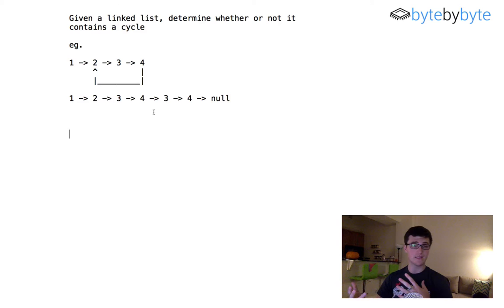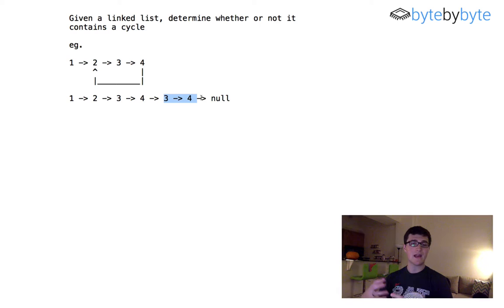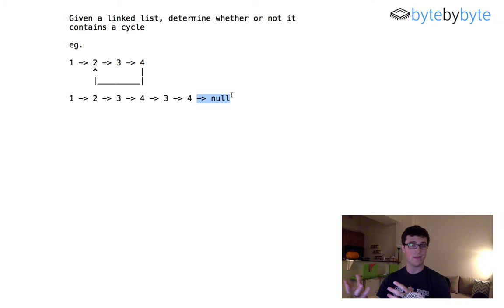Another thing that's a little unclear from the example here is we have this 3-4 that gets repeated. In theory you could imagine there being a case in which you are looking for cycles based on the values of the nodes rather than the nodes themselves. In this case our nodes are two separate nodes that both have the value of three, because otherwise we wouldn't have this linked to null — we would have a cycle if they were the same node. So it's good to understand exactly what is being asked of you.